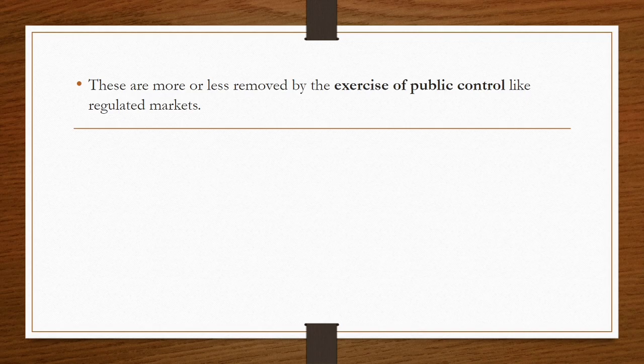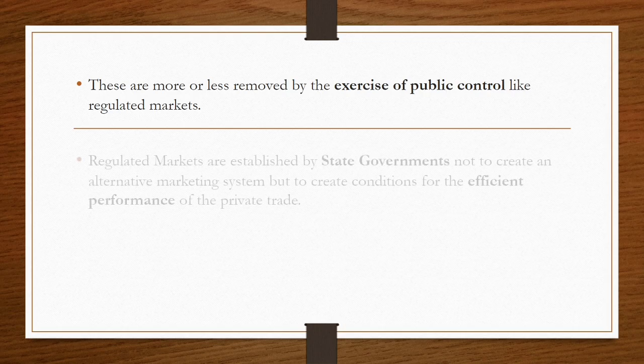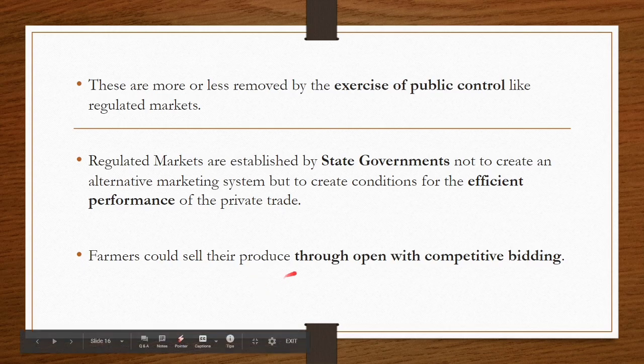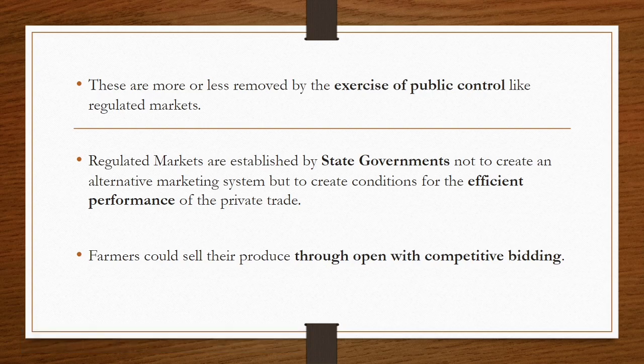While introducing regulated markets with some rules and regulations, these malpractices have been removed or reduced to a lower level. The establishment of regulated markets is not an alternative way of marketing, but it is created to make the performance of a market efficient for both the producer and the consumer. Farmers can sell their produce in regulated markets through open bidding or open auction method, with more competitive bidding when farmers sell directly to end consumers.